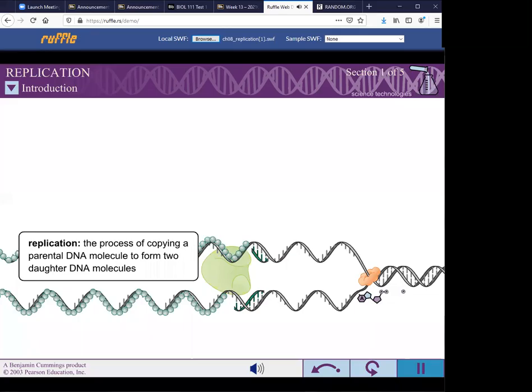The self-complementary nature of DNA allows each of the two strands of a parental DNA molecule to serve as a template for the formation of a daughter strand. This process is called DNA replication.